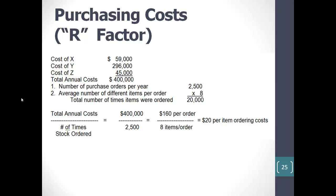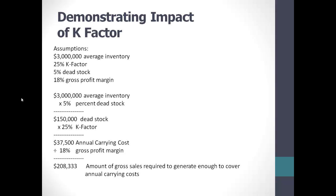All of that was a build-up for the really important thing: showing management why the dead stock's got to go based on the carrying cost. Let's consider an example. Let's say we've got $3 million average inventory, our K factor is 25% — $0.25 per dollar per year — let's say 5% of it is dead stock, and let's say we have an 18% gross profit margin. $3 million times 5% dead stock means we've got $150,000 in dead stock. Multiply that times the 25% K factor and we are spending $37,500 a year to literally repurchase our dead stock.